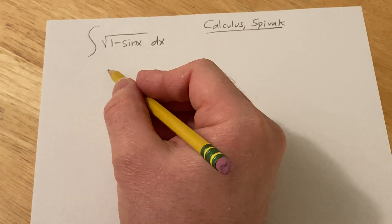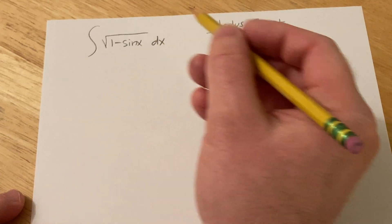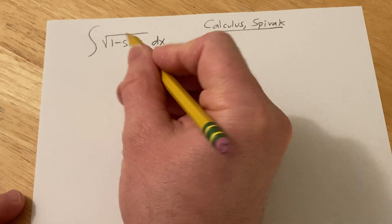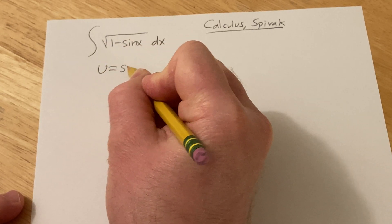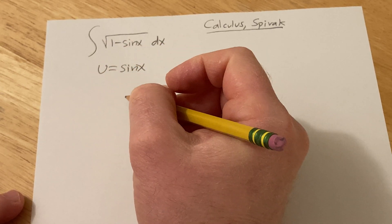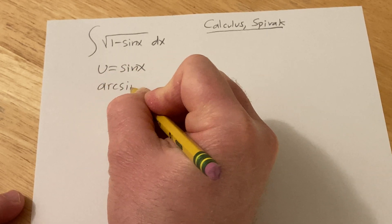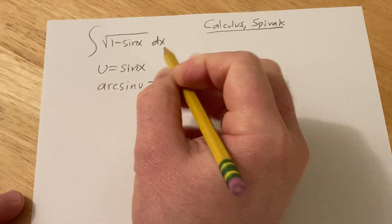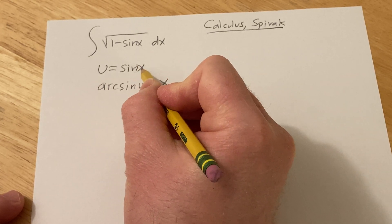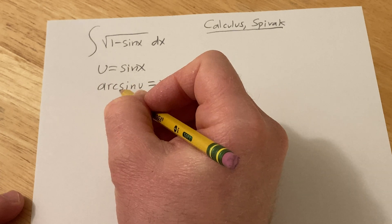Okay, so to do this problem, I think one way perhaps to try to do it is to let u be equal to sine x. And if u is equal to sine x, then the arc sine of u is equal to x. So if sine takes x and sends it to u, the arc sine takes u back to x.